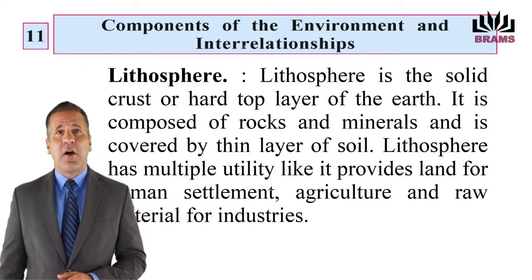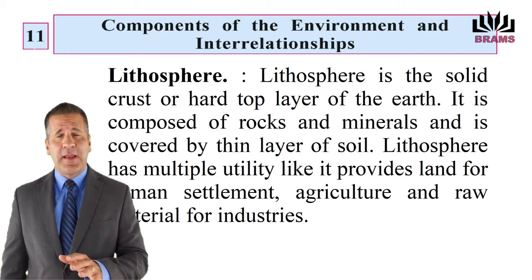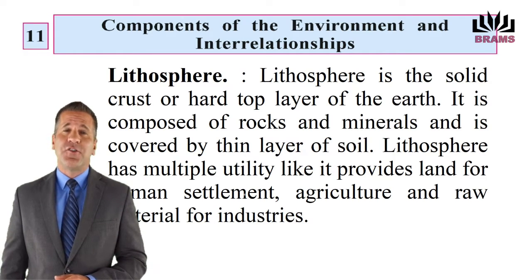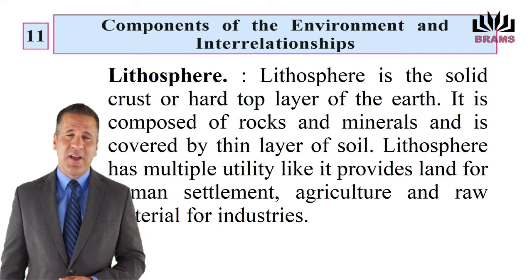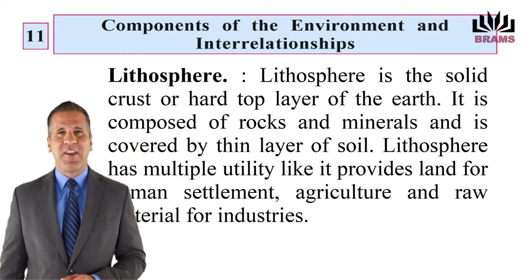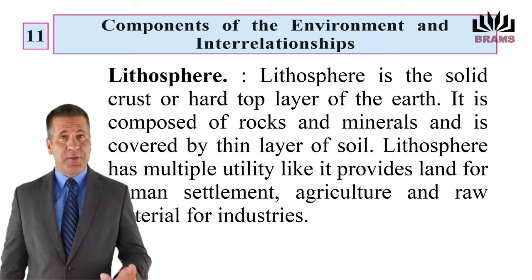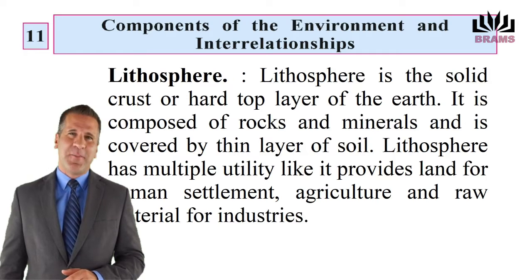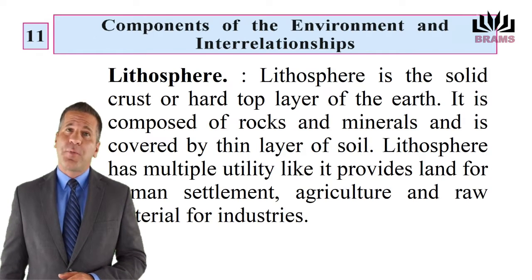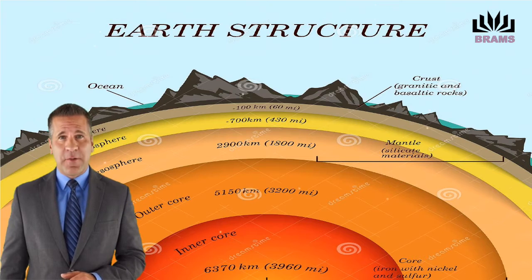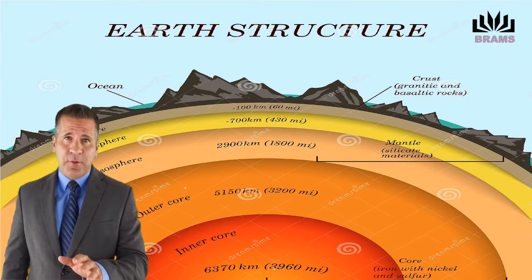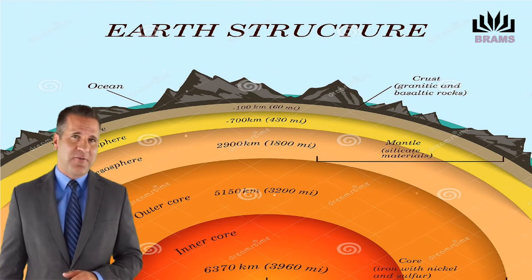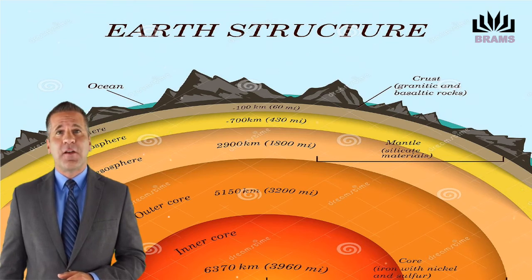Lithosphere is the solid crust or hard top layer of the earth. It is composed of rocks and minerals and is covered by a thin layer of soil. Lithosphere has multiple utilities — it provides land for human settlement, agriculture and raw material for industries. मृदावरण: पृथ्वी के ऊपर की ठोस परत को मृदावरण कहते हैं। यह परत चट्टानों, खनिजों और मिट्टी से बनी है। मृदावरण की मुख्य उपयोगिता यह है कि वह सजीव सृष्टि के लिए आवास, कृषि के लिए जमीन तथा उद्योगों के लिए कच्चा माल उपलब्ध कराता है।